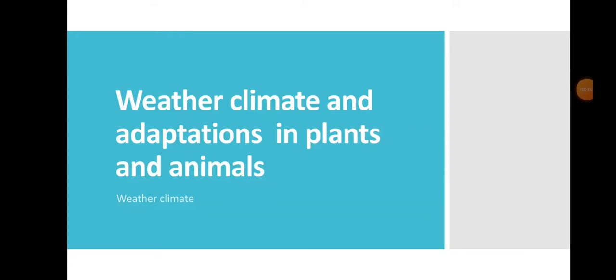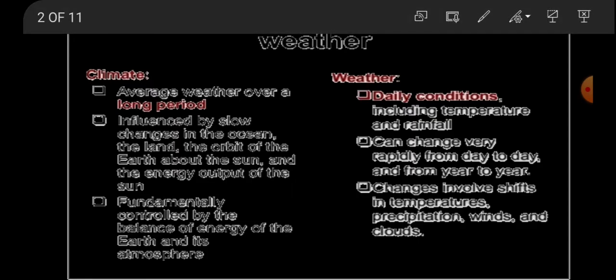Namaste children, welcome to another session of our chapter on weather, climate, and adaptations in plants and animals. In our earlier class, we came to know what weather and climate are. Weather refers to the atmospheric conditions of an area for a short-term duration — the day-to-day atmospheric conditions of a place.